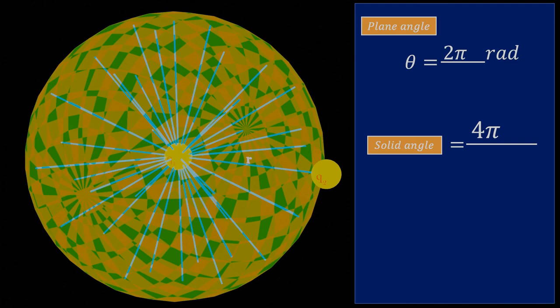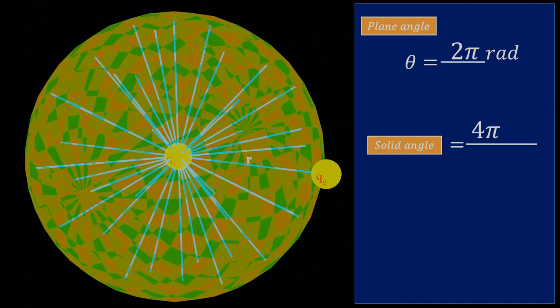Therefore, we can say that the impact of the electric field lines of a charge in 3D space is spread over a solid angle of 4π.